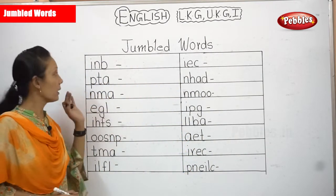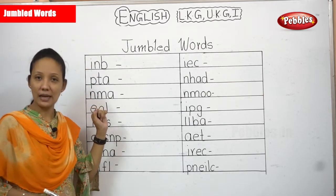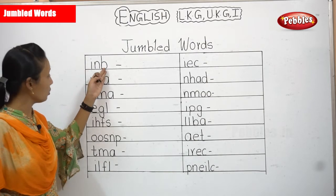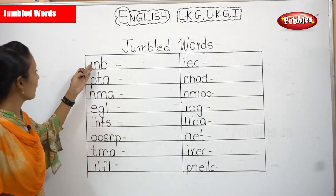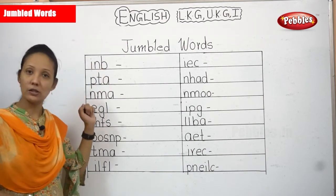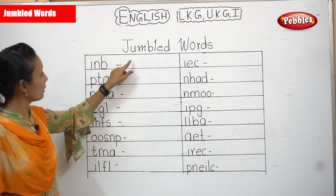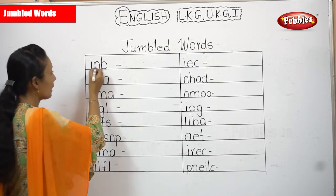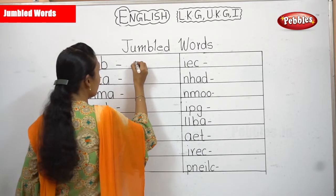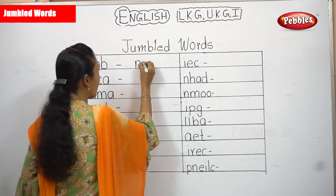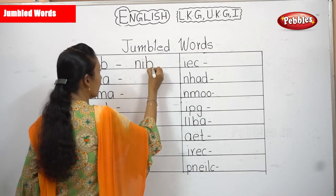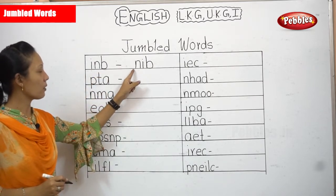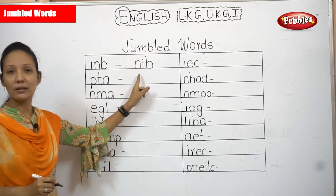Now the jumble ones are over. The first one is INB. There is no word as INB, isn't it? Now, do we have NIB? Yes, NIB is also there. And BIN is also there. So from this jumble word, we can make two words. From your jumble letters, you place the spellings in the correct order and you get the correct word. NIB.